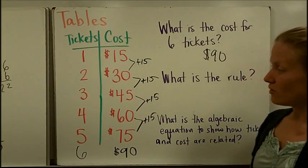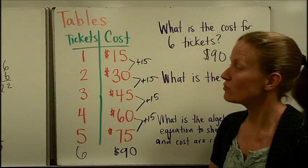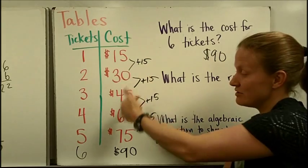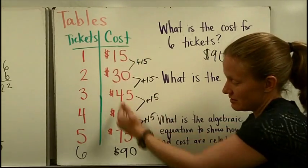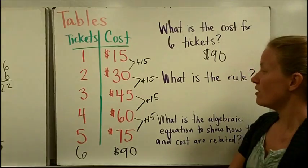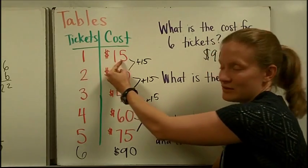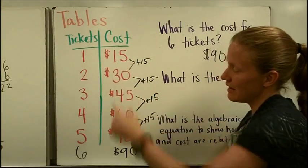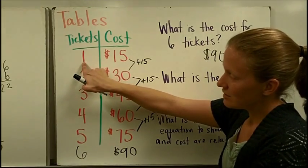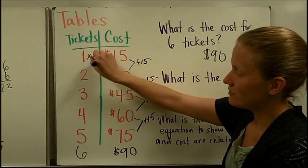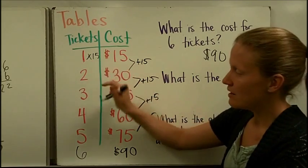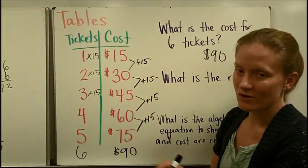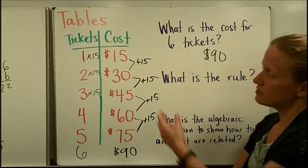And now we have to think, what is the rule? Well there's two different ways you can really describe the rule. You could describe the rule by saying that each time I added a ticket it was 15 more dollars. So you can talk about just this pattern. But you can also talk about the rule by saying how you get from this number to this number, how you take the number of tickets and figure out the cost. And in that case, the rule would be take the amount of tickets and multiply it by 15. 1 times 15 is 15. 2 times 15 is 30. 3 times 15 is 45. So we have two ways really that we can describe this rule.